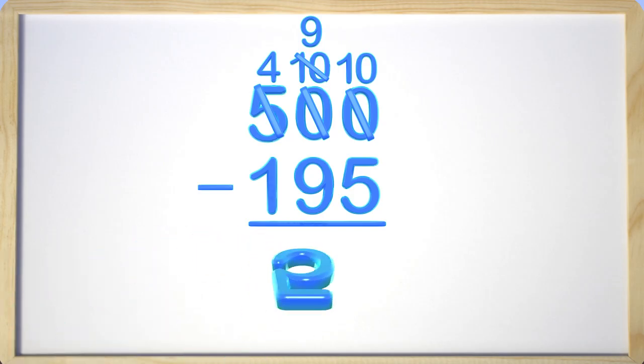Ten subtract five is five. In the tens place, we have nine subtract nine, which is zero. The hundreds place has four subtract one, which gives us three. The answer is three hundred and five.